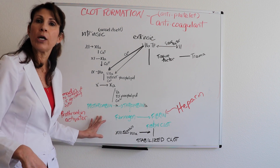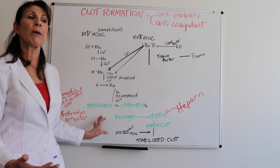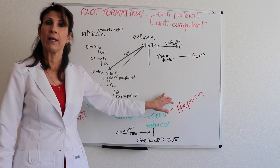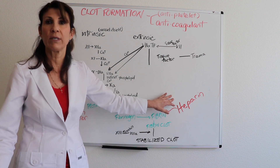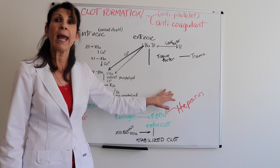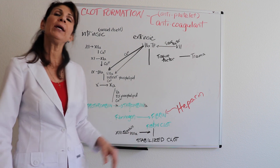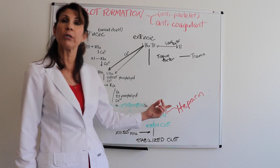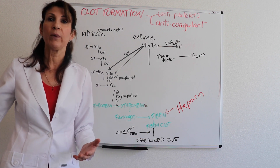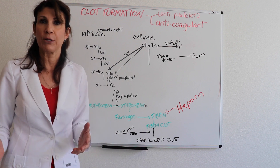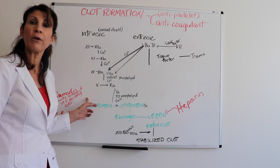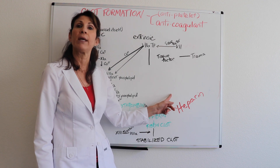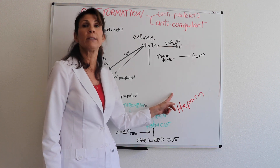Since the PT-INR takes two to three days to reach therapeutic level, we may need something in the interim. For patients with deep vein thrombosis, pulmonary emboli, or acute coronary syndromes, we need anticoagulation now — that's where heparin comes in. Heparin has an immediate onset and a very short half-life, so within 30 to 60 minutes of turning off the heparin drip, you're back to baseline. You must ensure Coumadin is therapeutic before discontinuing heparin.